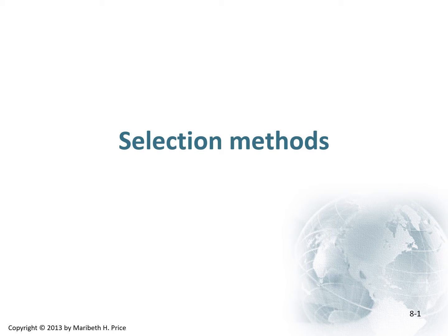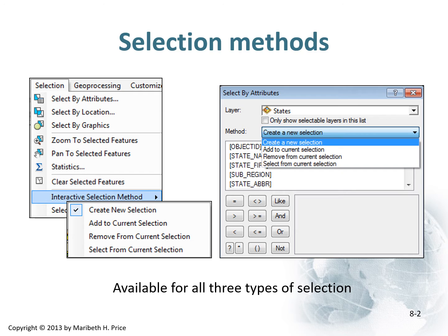Let's talk about selection methods. When we do selections, there are lots of options. We can simply select by attributes, by locations, by graphics. We can do interactive selections where we create new selections, add to selections, remove from selections, or select from current selections. There are lots of different types of things and ways to make various selections.